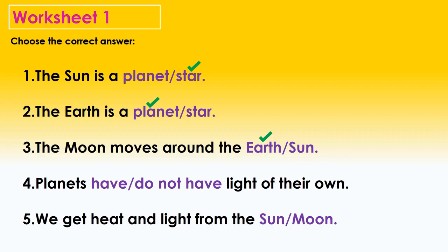Moving to the fourth one: Planets have or do not have light of their own? The correct answer is planets do not have light of their own. Moving to the fifth one: We get heat and light from the Sun or moon? The correct answer is Sun.